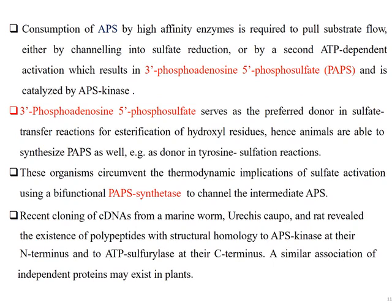Consumption of APS by high-affinity enzymes is required to pull substrate flow, either by channeling into sulfate reduction or by a second ATP-dependent activation catalyzed by APS kinase, which results in 3'-phosphoadenosine-5'-phosphosulfate (PAPS). PAPS serves as the preferred donor in sulfate transfer reactions for esterification of hydroxyl residues. Animals are also able to synthesize PAPS for donor tyrosine sulfation reactions. These organisms circumvent the thermodynamic implications of sulfate activation using a bifunctional PAPS synthetase to channel the intermediate APS.